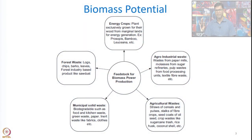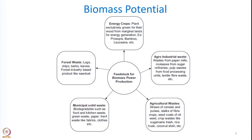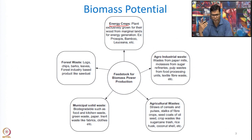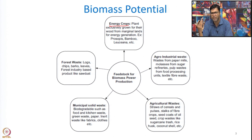When we look at biomass potential there are two different aspects. One is energy cultivation, or what we call energy crops. For example, Brazil is actually growing sugar cane to harness bioethanol. These are examples of energy crops or energy cultivation.